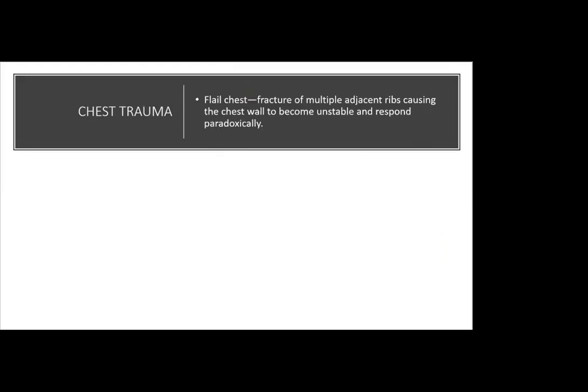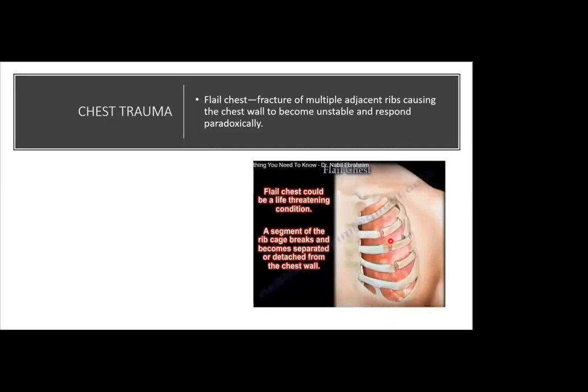One form of chest trauma is flail chest — a fracture of multiple adjacent ribs that causes the chest wall to become unstable and respond paradoxically. Normally with inspiration the chest moves out, but in the flail segment the chest moves in the opposite direction. With expiration the chest should move inward, but the flail area moves outward. This is paradoxical movement.